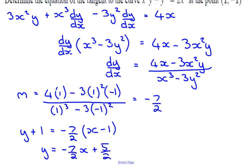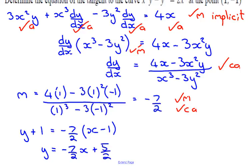Let's have a look at mark allocations. Okay, firstly, you're going to get an accuracy, accuracy, accuracy, and accuracy, and a method for the fact that you are using implicit differentiation. All right, you're going to get another method mark here, and a CA mark based on what you've done. Okay, and a method mark for subbing in, and a CA for getting it right. A method mark for subbing in, and a CA for getting it right.